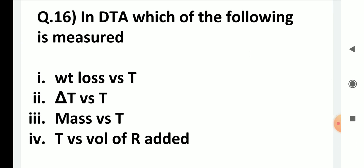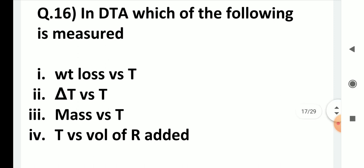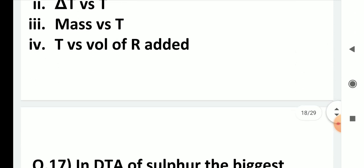In DTA, which of the following is measured: weight loss vs. temperature, ΔT vs. temperature, mass vs. temperature, or temperature vs. volume of reagent added? The answer is ΔT versus temperature — you are measuring the temperature difference between sample and reference versus the temperature of the reference.